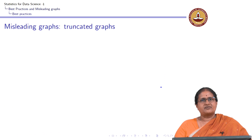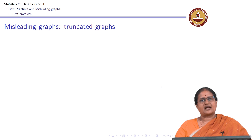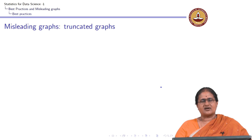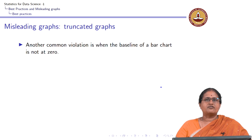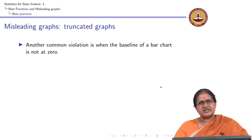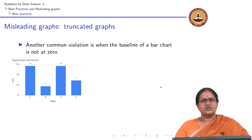The next way people mislead with graphs is through use of what we call truncated graphs. A truncated graph is where the baseline of a bar chart is not at zero. Let me show you this graph.